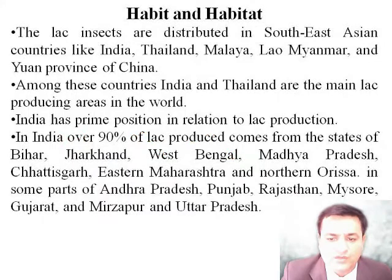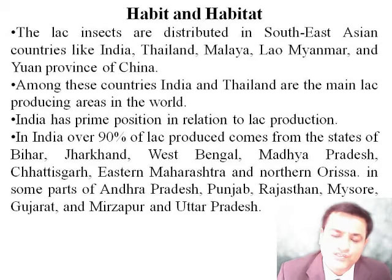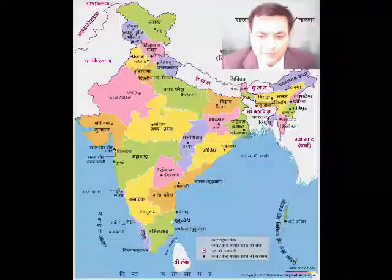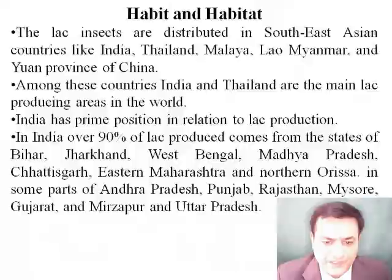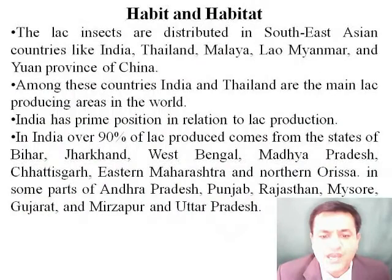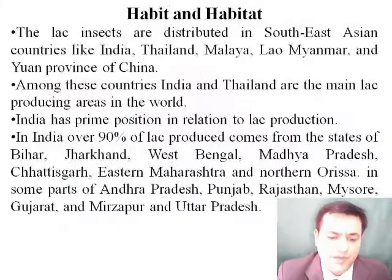The lac insects are distributed in Southeast Asian countries like India, Thailand, Malaya, Laos, Myanmar, China, etc. But India and Thailand are the main lac cultivation producing areas. India has a prime position in lac culture, covering about 90 percent of lac produced from different states: Bihar, Jharkhand, West Bengal, Madhya Pradesh, Chhattisgarh, Maharashtra, Orissa, Andhra Pradesh, Punjab, Rajasthan, Mysore, Gujarat, Mirzapur, and Uttar Pradesh.